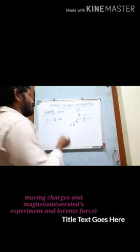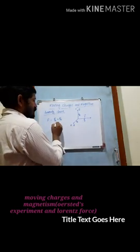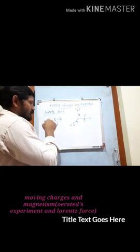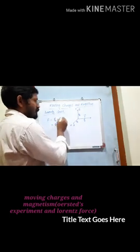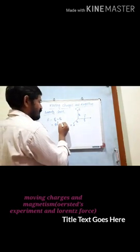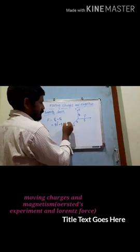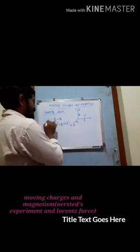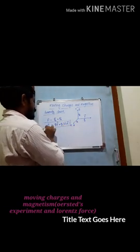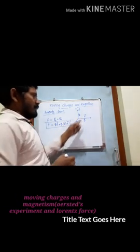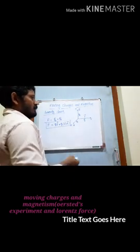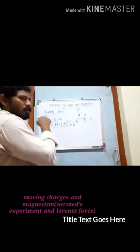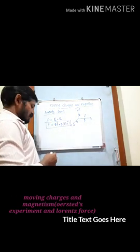Fe is equal to Q times E bar. Fe is the electrical force. F is equal to Q E plus Fb. The magnetic force Fb is equal to Q times V bar cross B bar, a vector product. This is the net force which is acting on the charge which is moving with a velocity V. This is the Lorentz force.